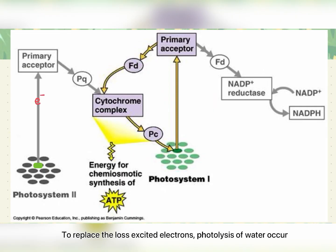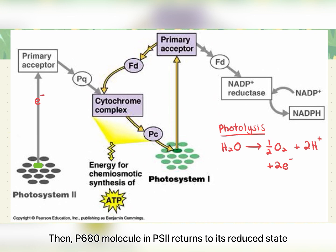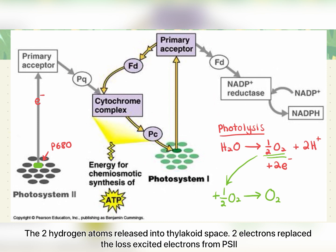To replace the lost excited electrons, photolysis of water occurs. H₂O will be converted into a half oxygen molecule, two hydrogen ions, and two electrons. Then, the P680 molecule in PS2 returns to its reduced state. The half-oxygen atom will be combined with another half-oxygen molecule, forming O₂ which is then released into the air. The two hydrogen ions are released into the thylakoid space, and two electrons replace the lost excited electrons from PS2.